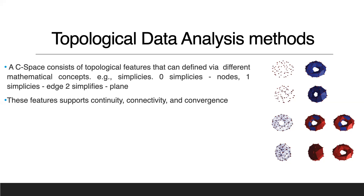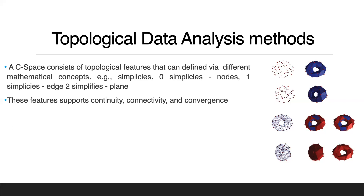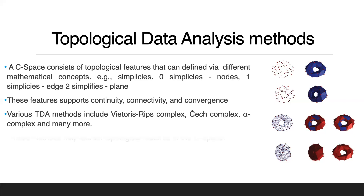A C-space can consist of topological features defined via different mathematical concepts. I look at simplices: zero-simplices represent nodes in the environment, one-simplices are edges, two-simplices are faces, and so on. These features support continuity, connectivity, and convergence in the space. Various TDA methods include the Vietoris-Rips complex, the Čech complex, the alpha complex, and many more. These complexes are notorious for being very expensive to compute, but they do help us extract the topological features of the C-space.